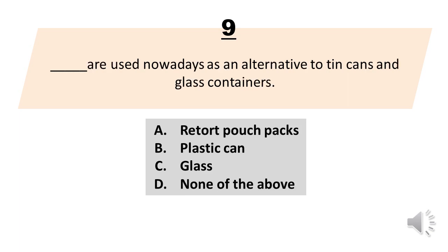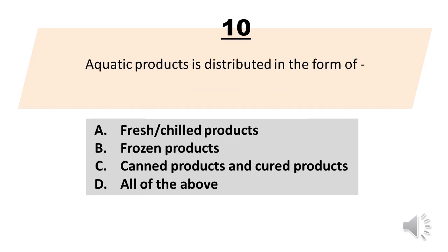Blank are used nowadays as an alternative to tin cans and glass containers. A. Retort pouch packs. B. Plastic can. C. Glass. D. None of the above. The correct answer is Letter A, Retort pouch packs.